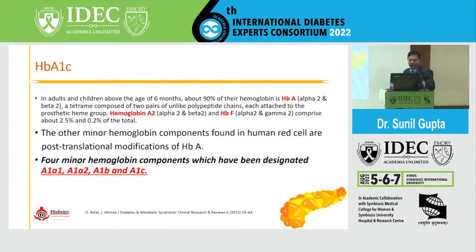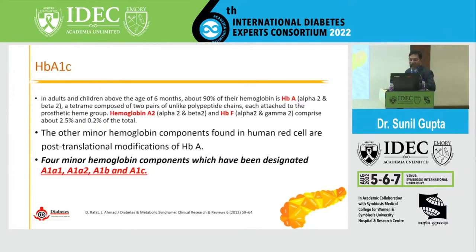There are some minor hemoglobin components of A, which are A1a, A1a2, A1b, and A1c. A1c is the one which we are going to talk about.